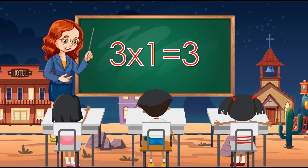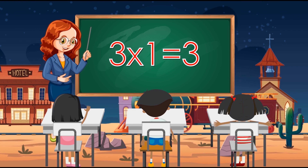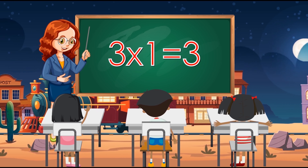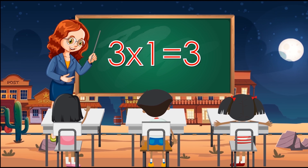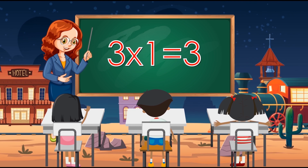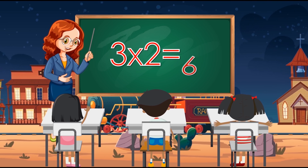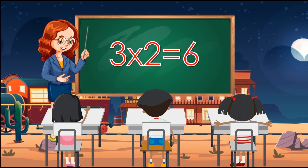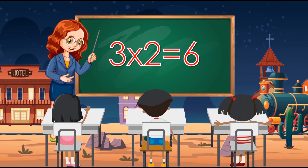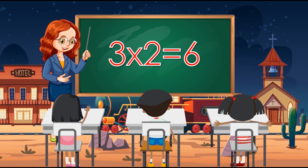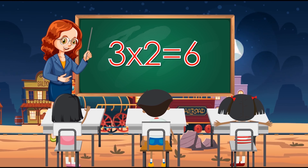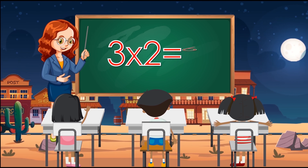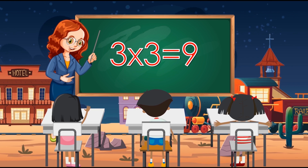Three times one equals three. Three times two equals six.